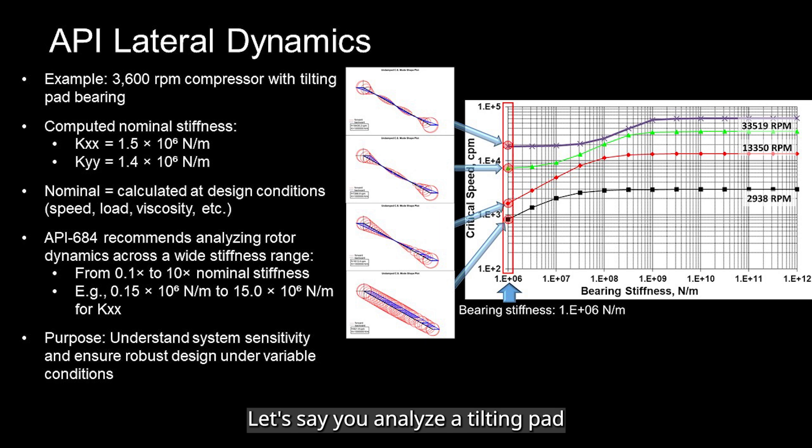Let's say you analyze a tilting pad bearing on a 3600 rpm compressor shaft, and based on your bearing design and operating conditions, you compute nominal bearing stiffness KXX and KYY. This is your nominal stiffness because it is calculated at nominal design point, such as load, speed, temperature, and oil viscosity.